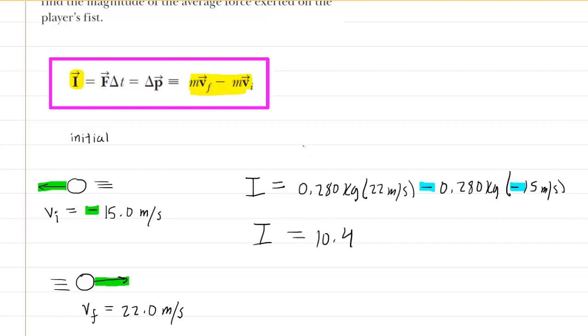As far as the units are concerned, you can either memorize them or look carefully at your calculation setup. You have kilograms being multiplied by meters per second, so that would be the unit of impulse as well. This is the correct answer to part A.